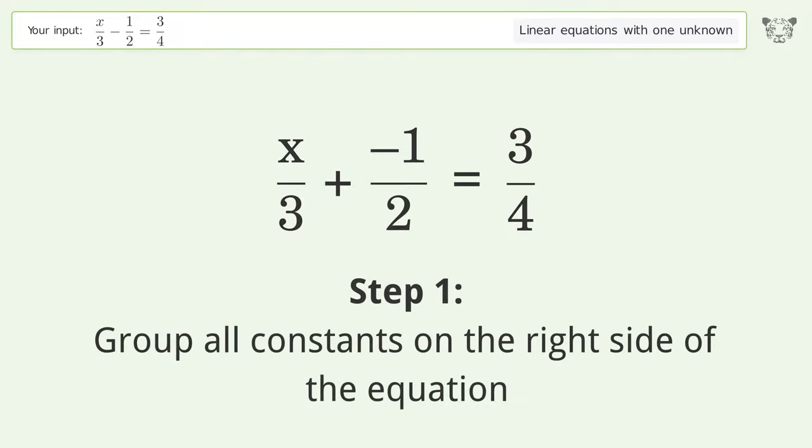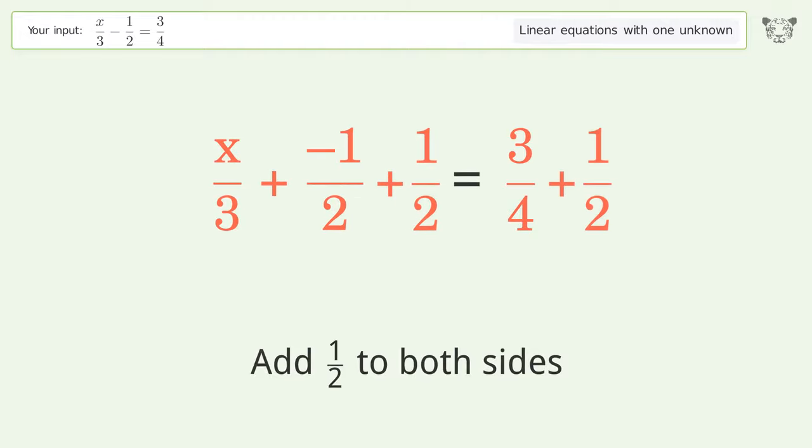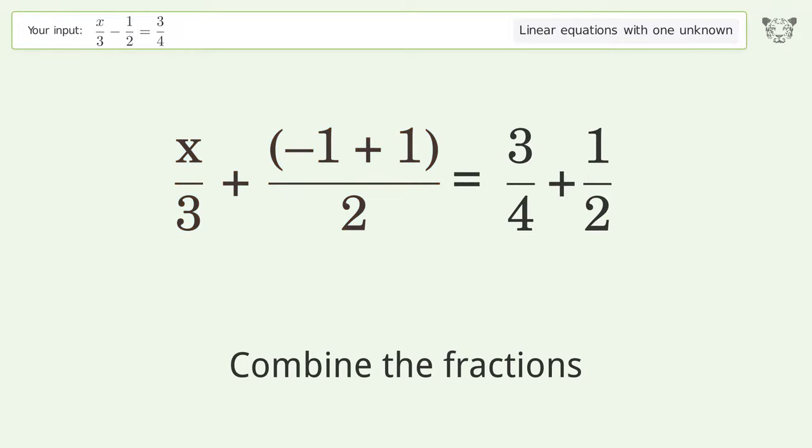Group all constants on the right side of the equation. Add 1 over 2 to both sides. Combine the fractions. Combine the numerators.